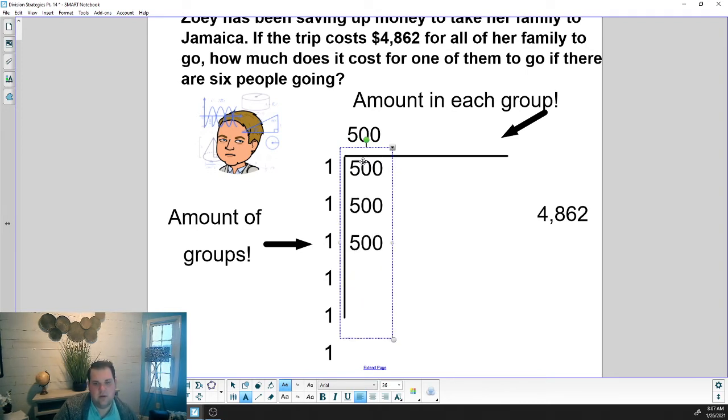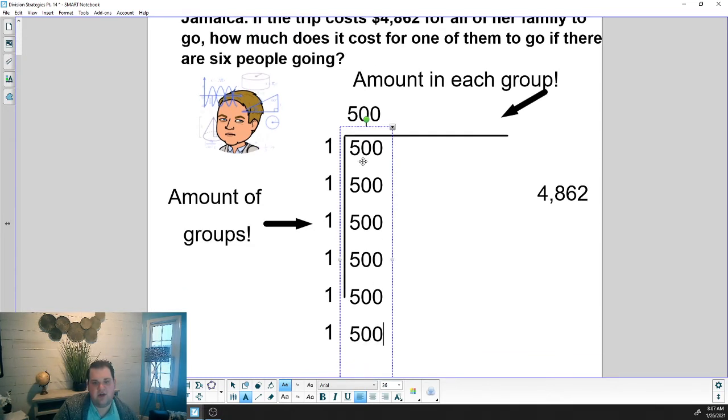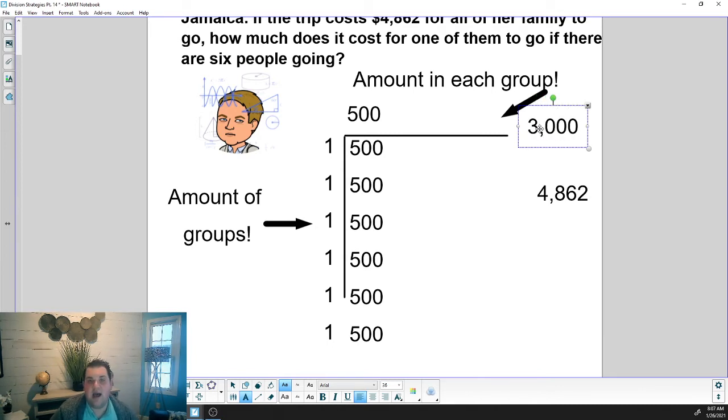If I do that, I'm going to have $500 for the first person. That's the cost. Each person right now is paying $500 for the trip. If I add all those 500s together, I have $500, then $1,000, $1,500, $2,000, $2,500, $3,000. So right now I have $3,000 in my array.